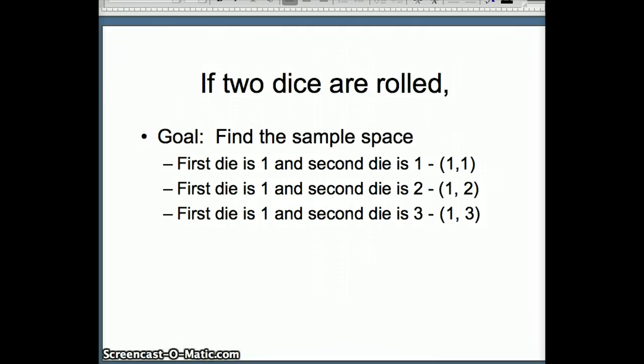But if two dice are rolled, it's a more complex sample space. So we have to think of it this way. If the first die is 1 and the second die is 1, the result is (1,1). If the first die is 1 and the second die is 2, the result is (1,2). If the first die is 1 and the second die is 3, the result is (1,3).